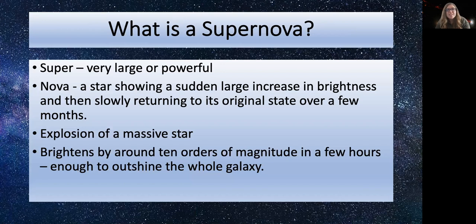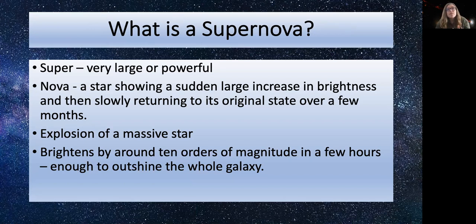The topic of this talk is supernovae. 'Super' means large or powerful, and 'nova' is a star which shows a sudden large increase in brightness and then slowly returns to its original state over a few months. When supernovae were first observed, they were thought to be new stars, because there was suddenly a bright light in a part of the sky that had been studied before. But actually they're the result of the later stages of the life of a massive star.